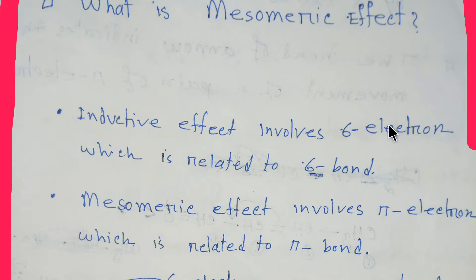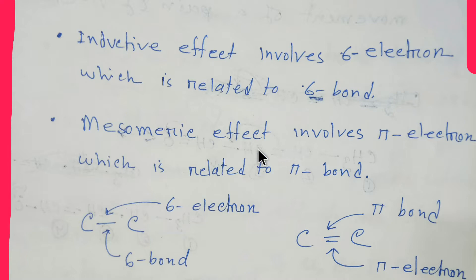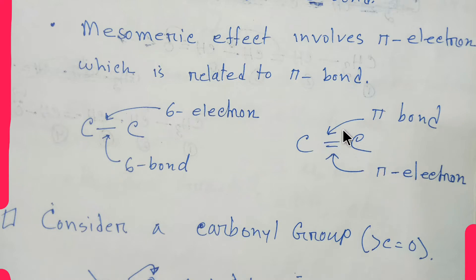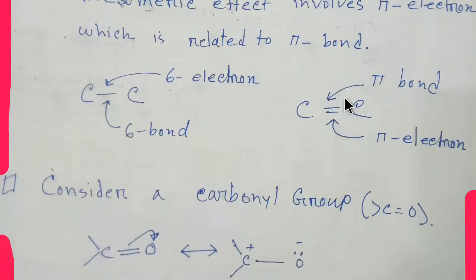The mesomeric effect involves pi electrons, which come from pi bonds. A carbon-carbon single bond is a sigma bond, and the electron related to it is called a sigma electron. A double bond has one sigma bond and one pi bond, and the electron related to the pi bond is called a pi electron.